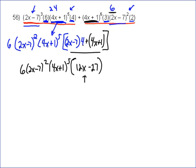And actually we could pull a 3 out of both of those. It would probably be best if we did. So let's go ahead and pull a 3 out of both of those. So that's going to give me 18 out front because I pulled the 3 out. 2x minus 7 squared, 4x plus 1 to the fifth. And then I pulled the 3 out, so that leaves me with 4x minus 9.